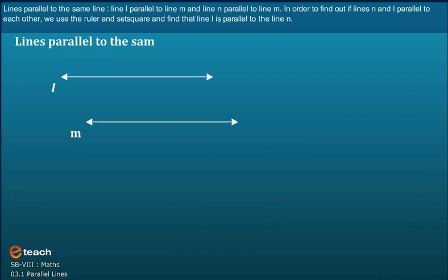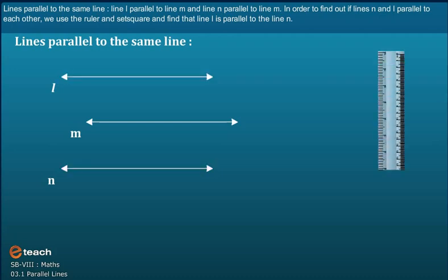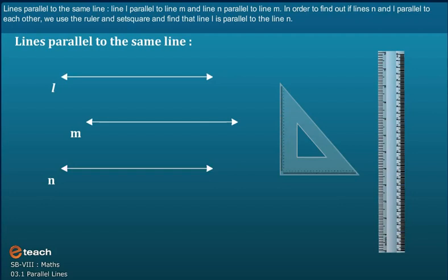Lines parallel to the same line: Line L is parallel to line M and line N is parallel to line M. In order to find out if line N and line L are parallel to each other, we use the ruler and set square and find that line L is parallel to line N.